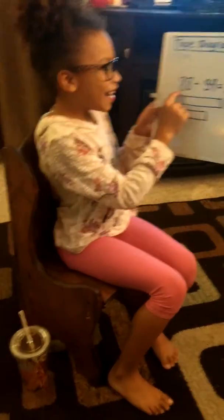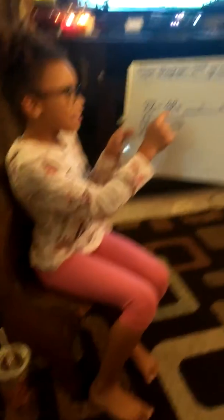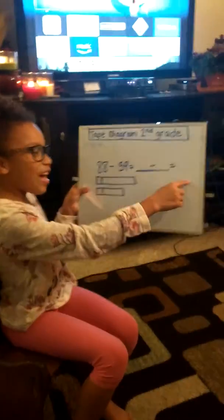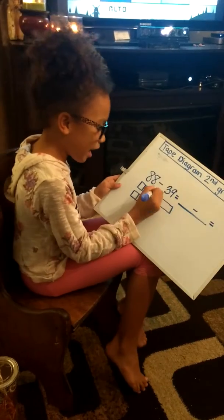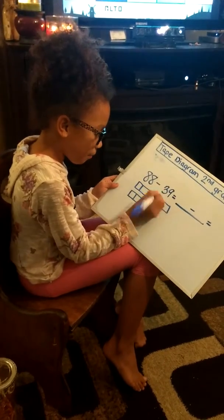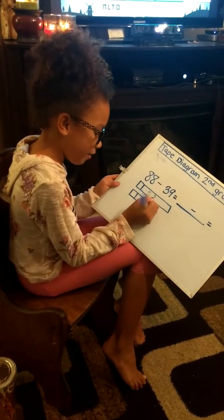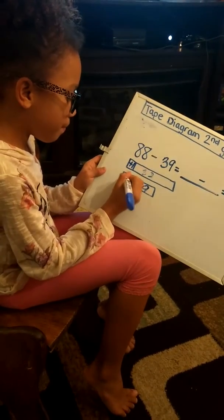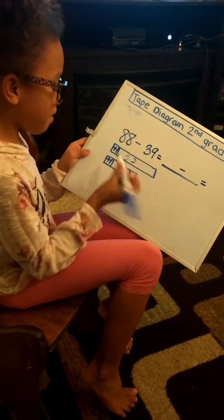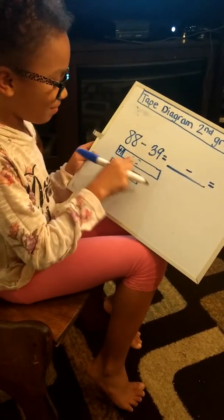So I have 88 minus 39, and I have that set up over there. These two are partners and those two are partners, so I'm going to put 88 and then 39. Both of them have to have plus 1.